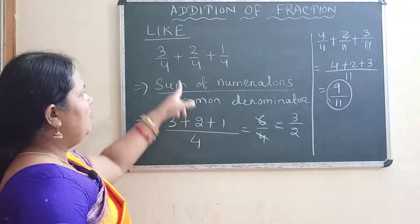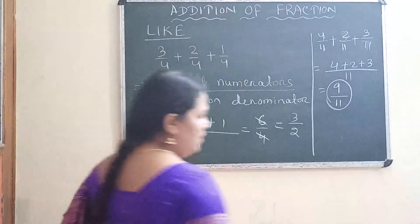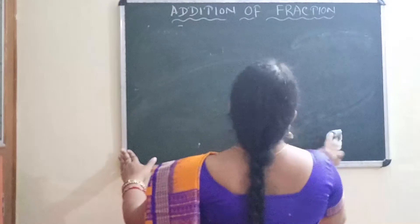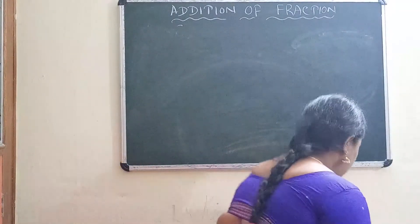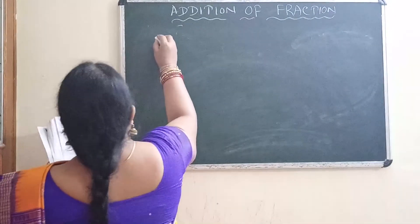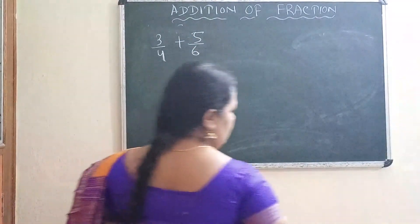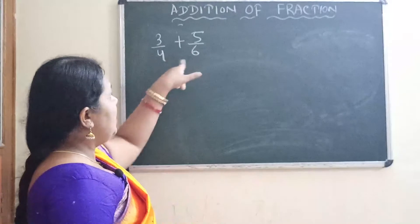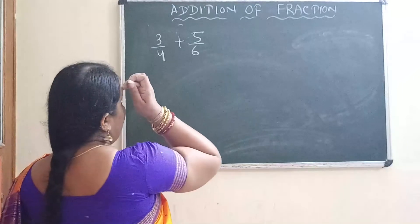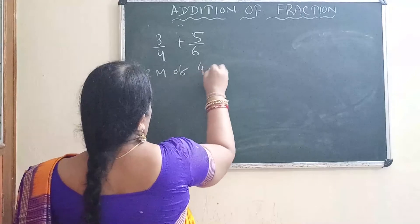So children, when the denominators are the same — like fractions — you can apply this formula. But when the fractions are unlike, how do we add? The first step is to find the LCM of the denominators. So for 3 by 4 plus 5 by 6, these are unlike fractions — no common denominator. First step: find the LCM of 4 and 6.